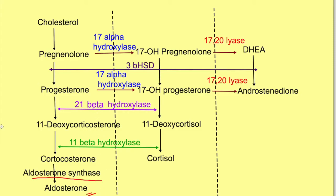In summary, horizontal enzymes include 17-alpha hydroxylase and 17-20 lyase. Vertical enzymes across the three major pathways are 3-beta hydroxysteroid dehydrogenase, 21-beta hydroxylase, and 11-beta hydroxylase. Aldosterone synthase, present only in zona glomerulosa, is required for aldosterone synthesis. This knowledge is essential for understanding adrenogenital syndromes, which will be covered in a subsequent video.